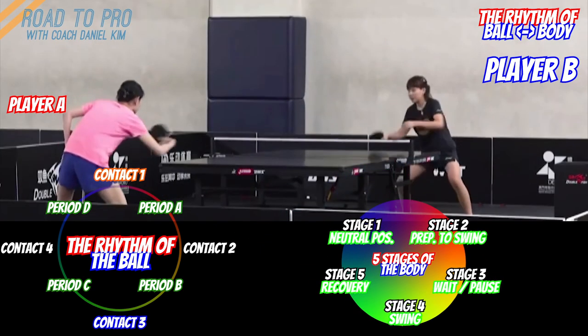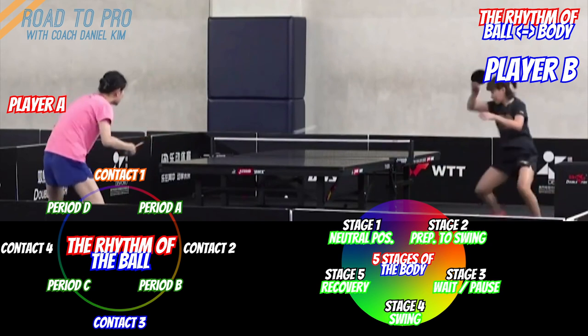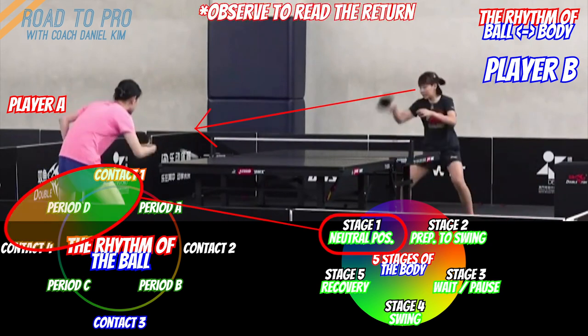Now let's take a look at how each of them corresponds to each other, from player B's perspective as player A starts the rally. Stage 1 corresponds to period D. Player B will be in stage 1 — the neutral position — to observe A's preparation until A strikes the ball. This neutral position is not only about being ready for the next stroke, but needs to have intuition of the next ball. You have to observe your opponent's pre-motion to have an idea what kind of ball they will play. One tip: observe the whole body, but focus on the opponent's wrist because it tells you what they are about to do and helps you predict.